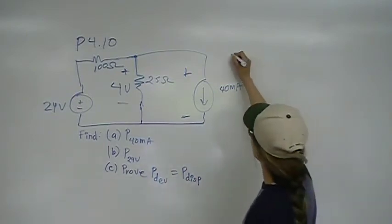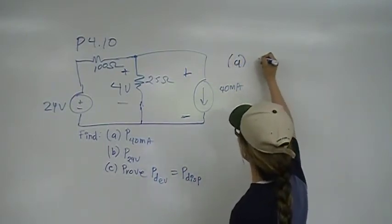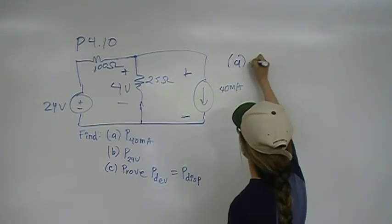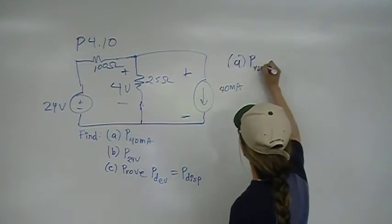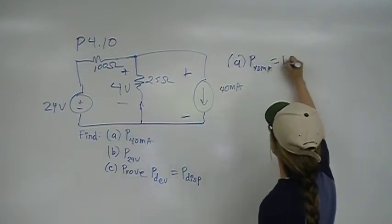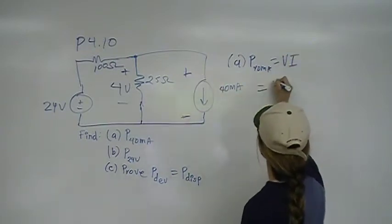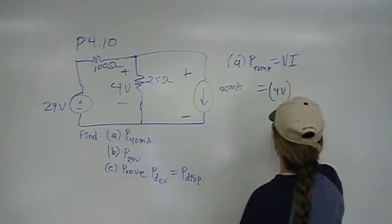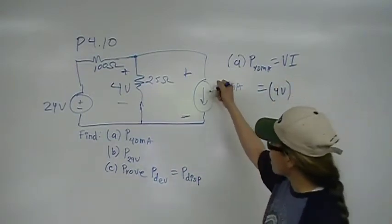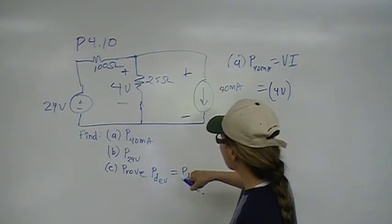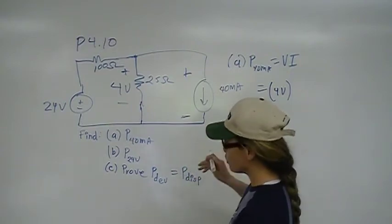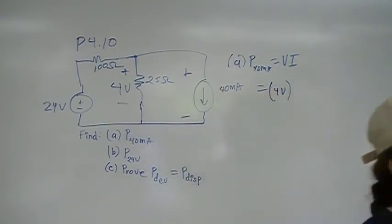So, part A, we have P 40 milliamps is equal to VI. The V is going to be 4 volts. And what is the I? The I, according to the passive sign convention, wait a second. I've got to see what that I is. Oh, it's 40 milliamps.